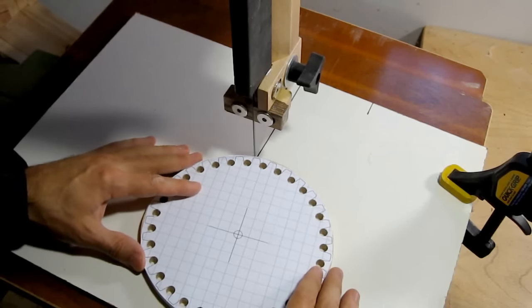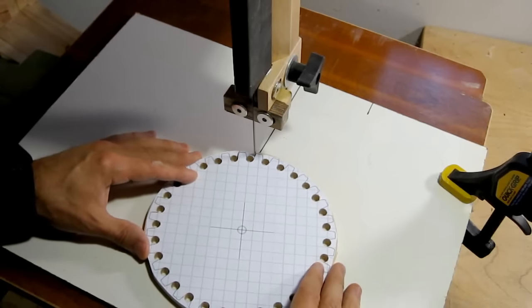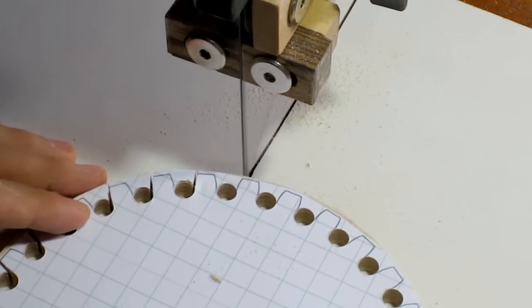With the bandsaw table tilted to the right, we can now cut out the left side of every tooth. That way the teeth will actually get a little bit narrower as they get towards the bottom.